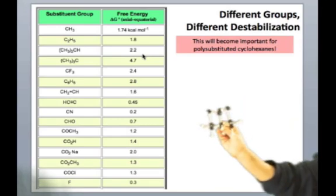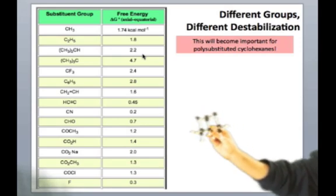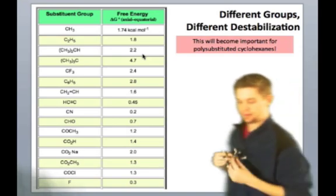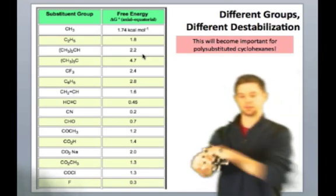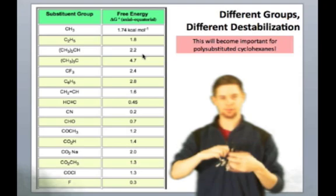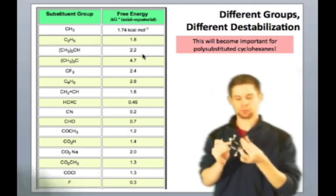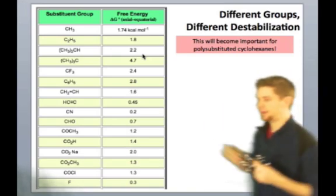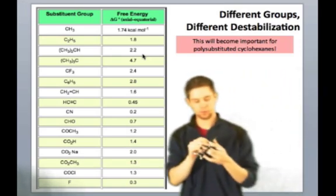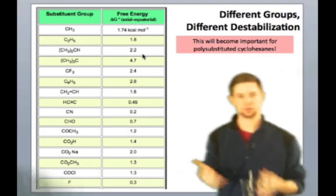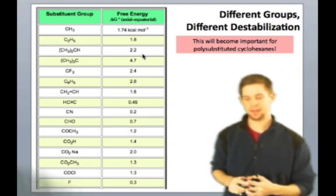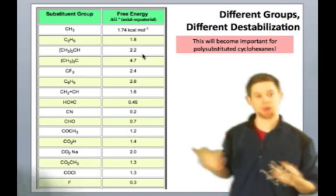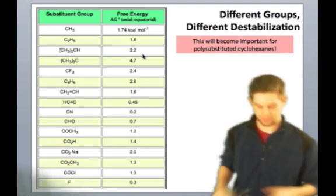But then the methyl groups would be pointing directly at the hydrogens. So there's really no way for that tert-butyl group to get out of the way, and that's why we see the larger destabilization, the huge jump in destabilization, when we add a methyl group onto the isopropyl group, which is what you're looking at here. So that's key to keep in mind, and this idea that different substituents have different A values or different destabilizations is going to become important when we start talking about disubstituting and polysubstituting cyclohexanes, which we're about to do.